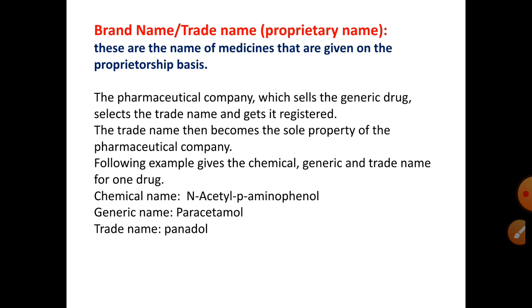Once the trade name is registered, it becomes the company's property. For example, Panadol is the registered property of its pharmaceutical company, and only that particular company can sell paracetamol under the name Panadol. The trade name thus becomes the sole property of the pharmaceutical company.